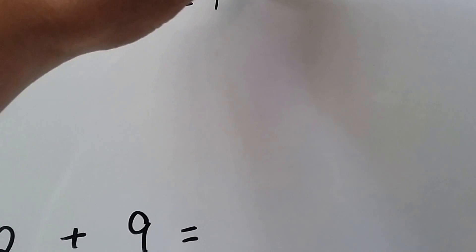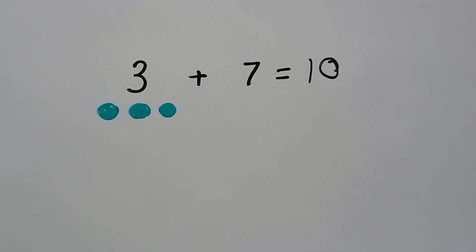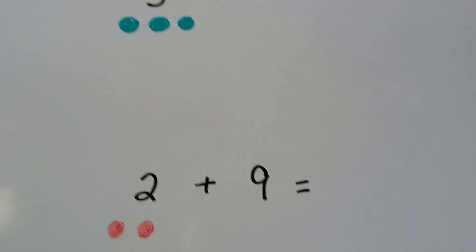Remember the commutative property, that rule said that it didn't matter what order we added them in. So we can still start with the larger number, even if it's the second number in our number sentence.